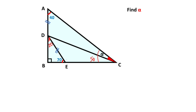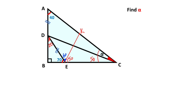So if we take a 50 degree angle from here like this, let's call this point K. If you notice that angle DEK must equal 60 degrees. Then if you focus on this triangle, this triangle is an isosceles triangle because the base angles are equal.